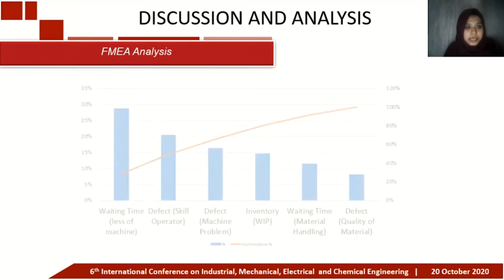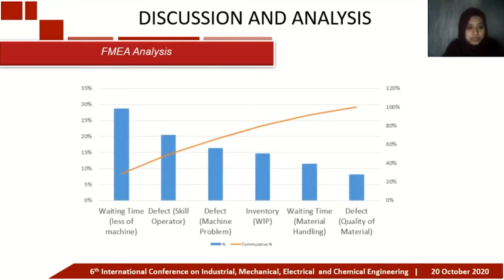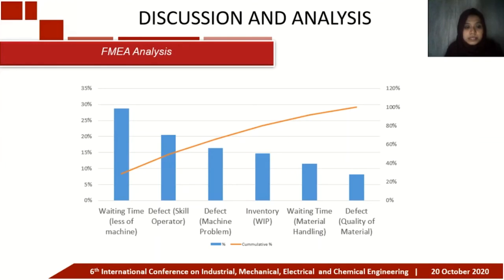The FMEA analysis uses Failure Mode and Effects Analysis to find the most serious problems by looking at the greatest Risk Priority Number (RPN) values. The most critical issues are: first, waiting time due to lack of machine production; second, defects caused by inaccurate machine setup and lack of skilled employees; third, defects caused by poor machine maintenance; and fourth, unnecessary WIP inventory during production due to lack of machine capacity.